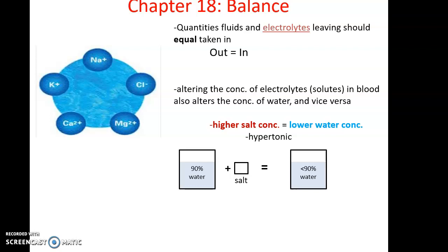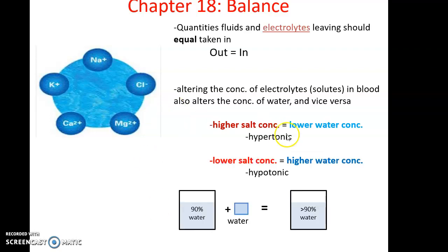We know that altering the concentration of electrolytes in the blood will alter the concentration of water and vice versa. If you have a higher salt concentration, that means you have a lower water concentration. For instance, if you are at 90% water and then you add a bunch of salt, now it is less than 90% water - salt is displacing some of the water. Conversely, if you add more water, you now have a hypotonic situation.